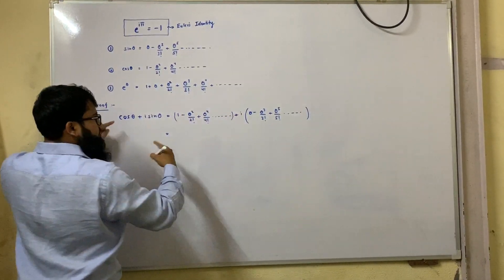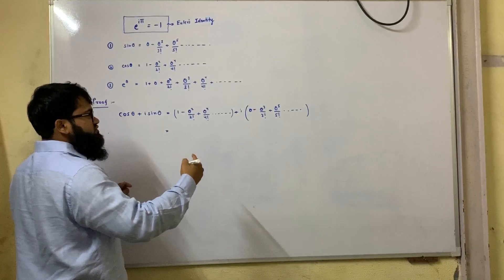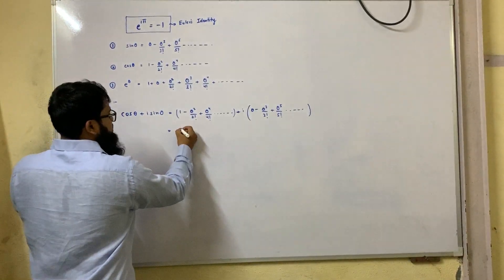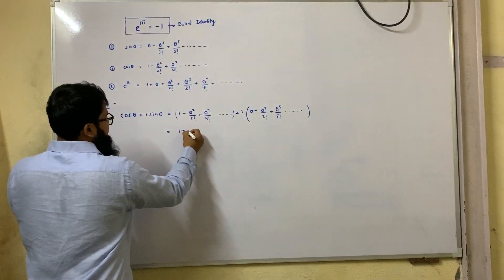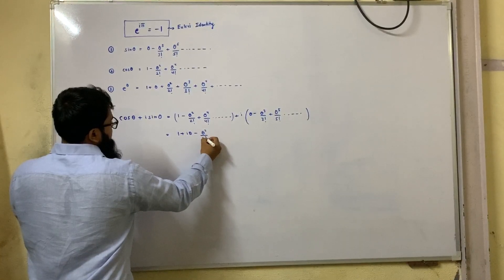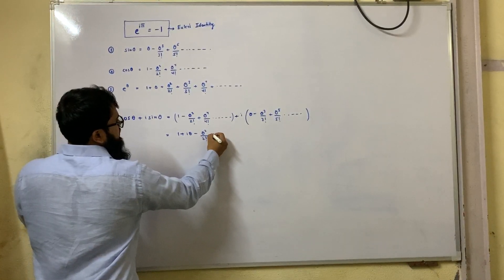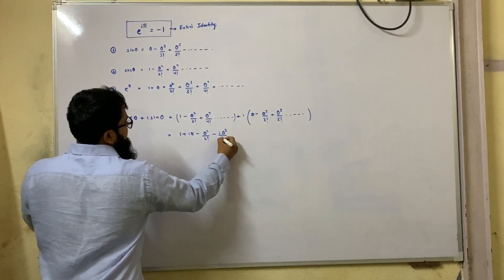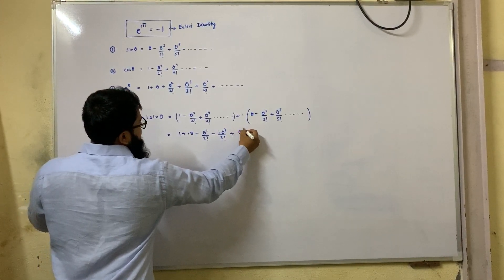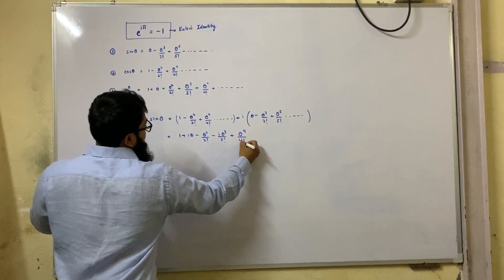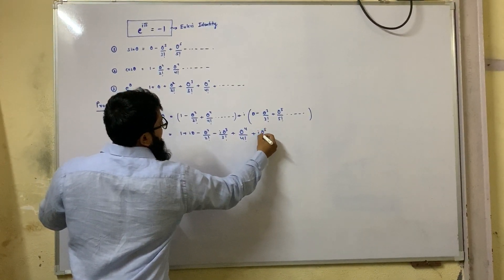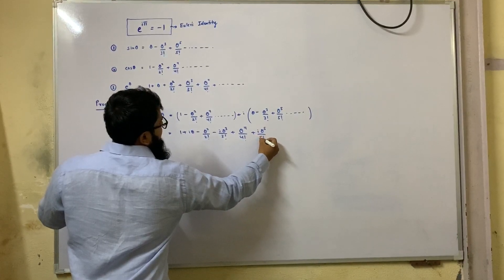Let us try to arrange it in ascending order of the powers of theta. You will get: 1 plus i theta, minus theta square by 2 factorial, minus i theta cube by 3 factorial, plus theta raise to 4 by 4 factorial, plus i theta raise to 5 by 5 factorial, and so on.